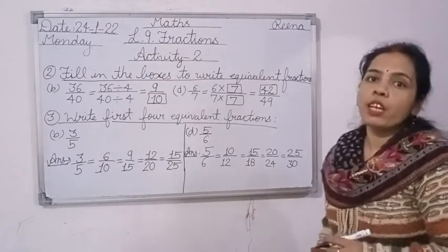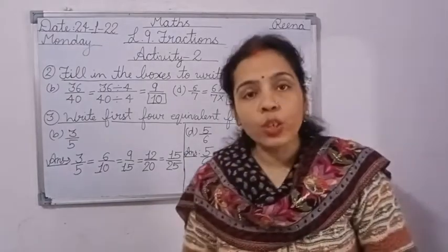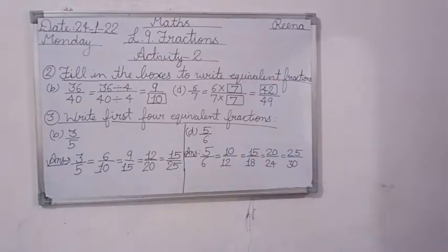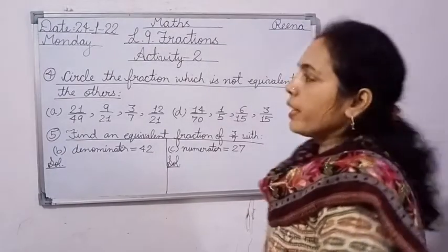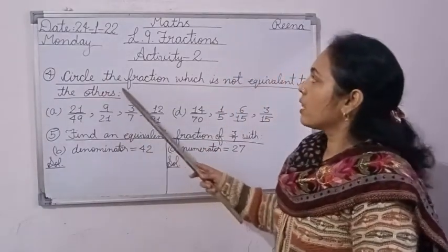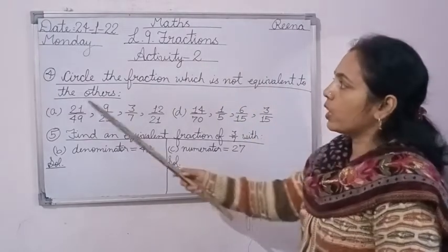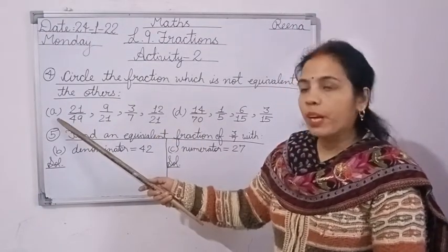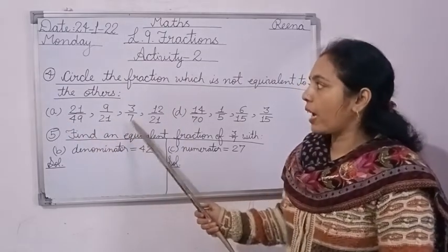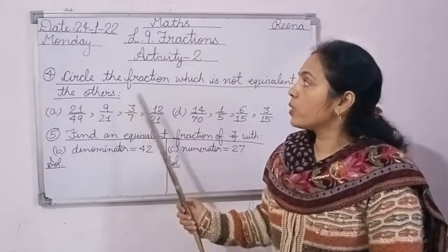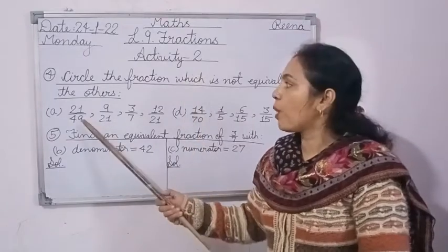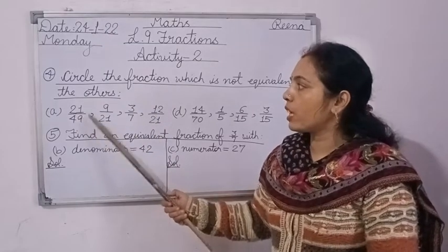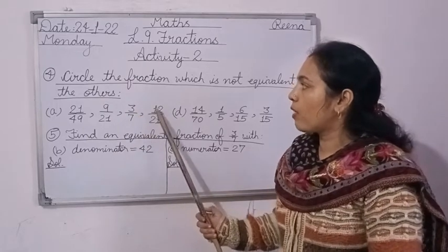These 4 fractions are equivalent fractions and that is your answer. You can solve the remaining parts by yourself with the help of the PDF. In question number 4, circle the fraction which is not equivalent to the others. In each part you have 4 fractions: in part A you have 21/49, 9/21, 3/7, and 12/21.